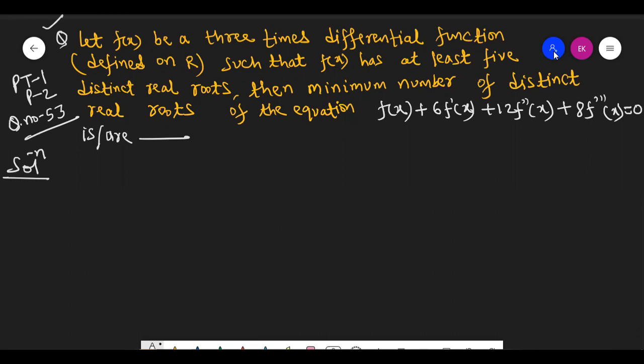Let f(x) be a 3 times differentiable function defined on R such that f(x) has at least 5 distinct real roots. So the first information is that f(x) has a minimum of 5 different real roots. Then we need the minimum number of distinct real zeros or distinct roots of this equation.